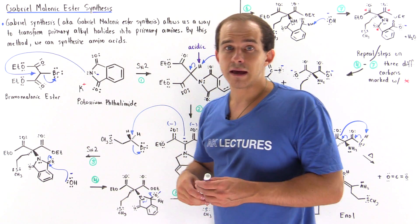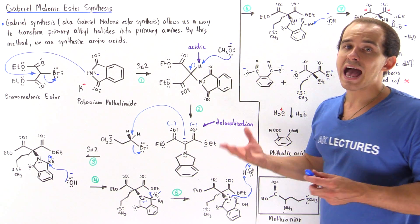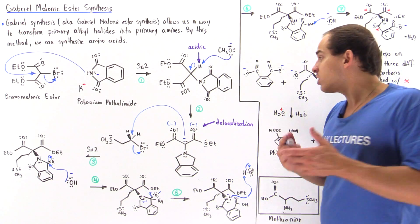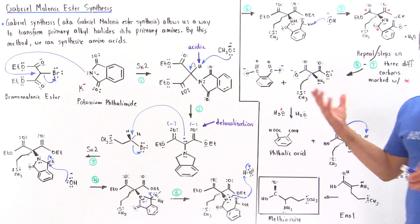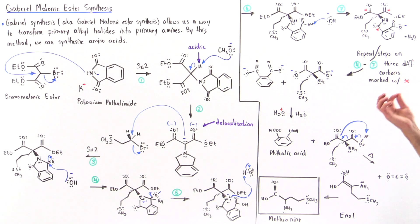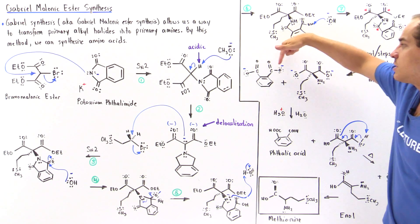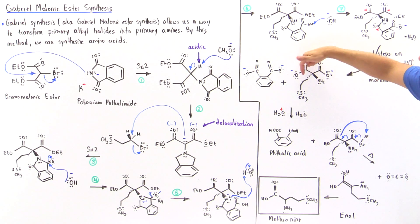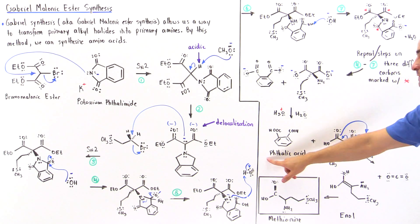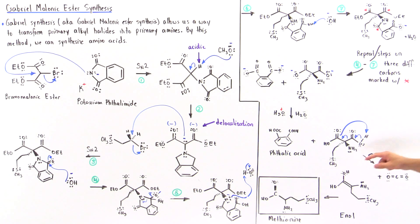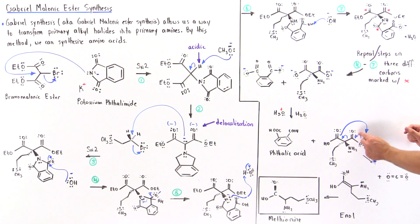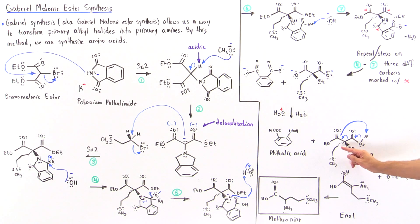In the next series of steps, we add some type of acid — hydrochloric acid or, for example, hydronium in the presence of water. This hydronium protonates these oxygens, and we form phthalic acid as well as this intermediate in which we have two carboxylic acid groups and the two different groups attached to our alpha carbon: the sulfur-containing group and our amine.